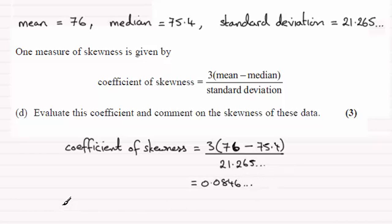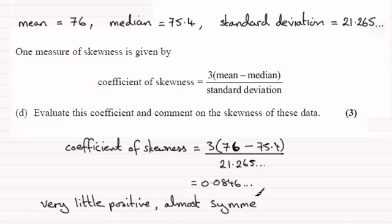So what we've got then is essentially very little positive skew. And I'm also going to say that it is almost symmetrical because it's close to zero. And that should get you the marks.